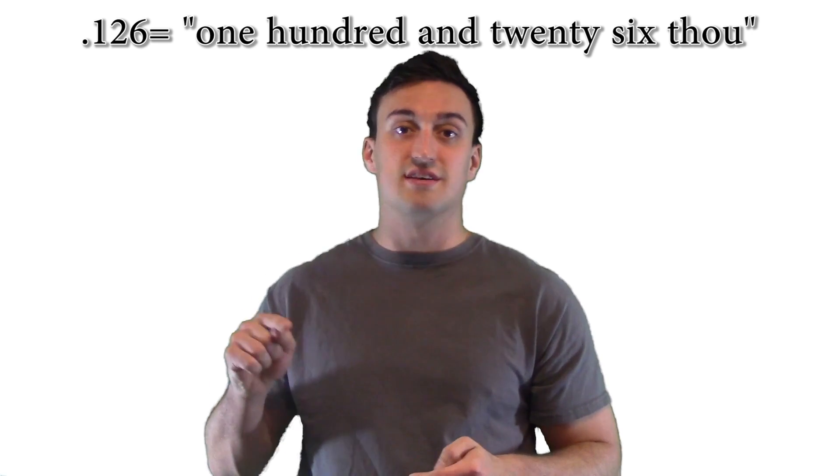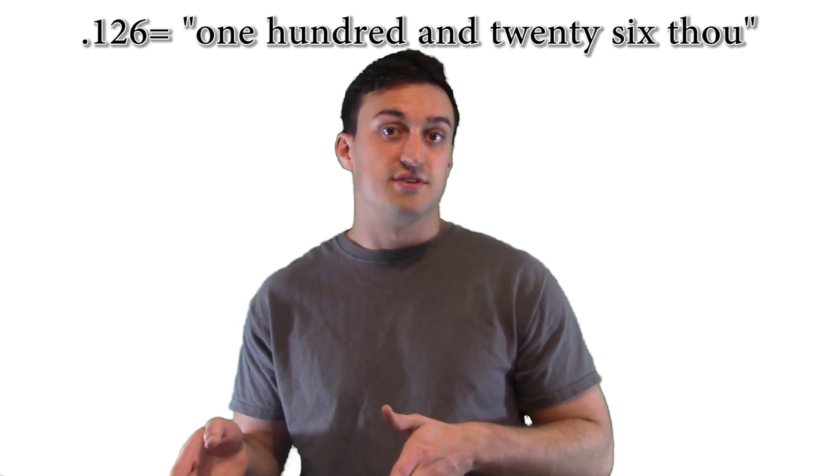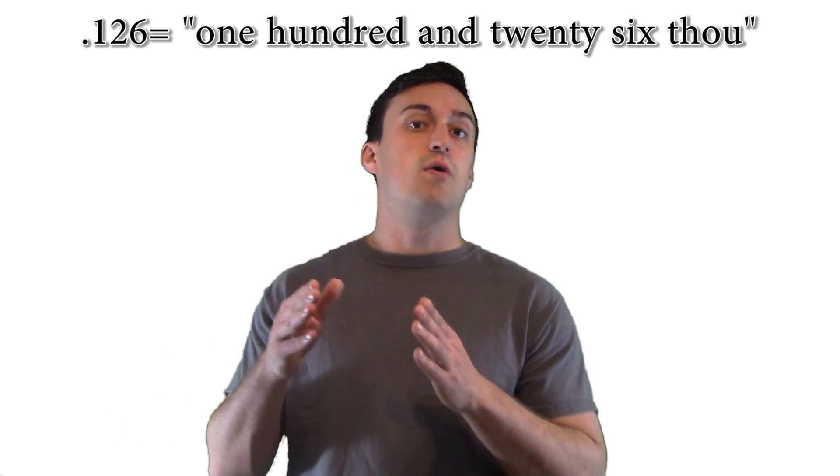...and you say tens instead of thousands, you're going to mess everything up. Take your time, learn this process, and we'll go through some examples right now. .126 is one hundred and twenty-six thou because that's 126 .001s added together.